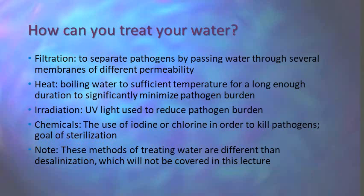What are the different ways in which we can treat our water? These methods are all effective in a variety of manners and they are more effective against some pathogens than others — something we're going to get into later. It's important to remember that you need to tailor your water purification to the environment that you're in. Filtration is the separation of pathogens by passing water through several membranes of different permeability. It's possible to create these in the wild yourself, but these days there are a lot of commercial filters. You can use heat to boil water — you get to a temperature high enough and long enough that the pathogens die off and you minimize the pathogen burden enough to make water potable.